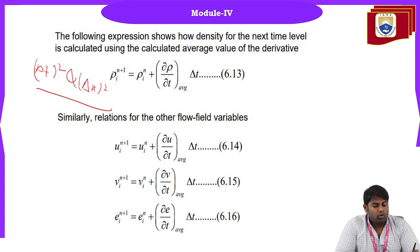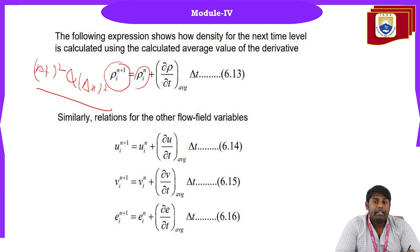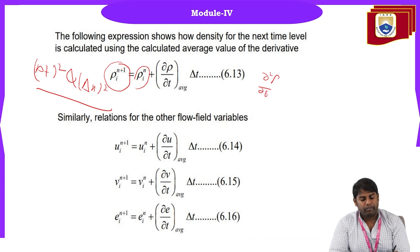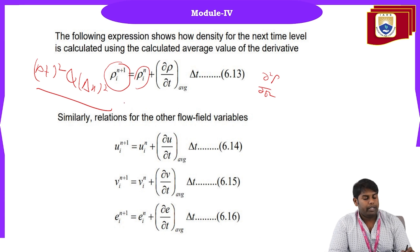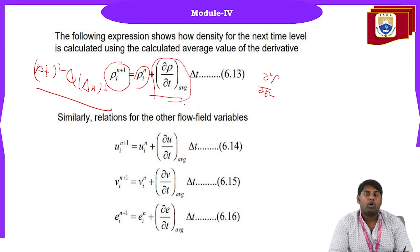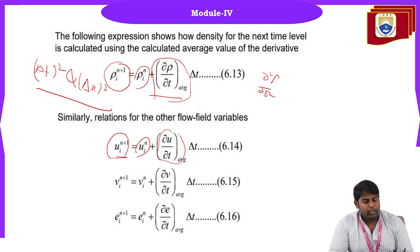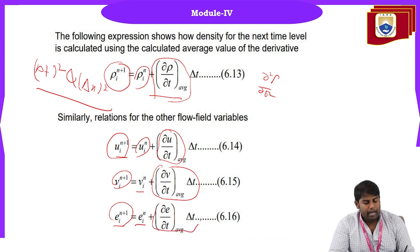In MacCormack's method, the value of density at the next time level equals the initial time level value plus an average term. Previously in Lax-Wendroff we substituted ∂²ρ/∂t², but in MacCormack's method we do not take the second derivative — instead we directly take the average of ∂ρ/∂t. Similarly, for u-velocity, v-velocity, and internal energy, the update is the initial value plus the average of the respective time derivative.